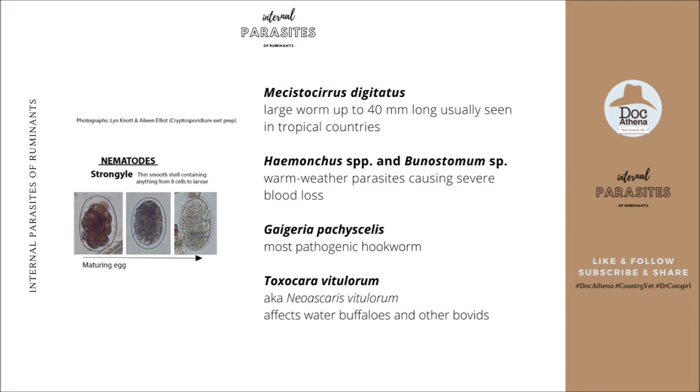Mecistocirrus digitatus is a large worm, up to 40 mm long, usually seen in tropical countries. This is very important for us in the Philippines since we are a tropical country. Mecistocirrus digitatus is one of the stomach worms of ruminants. Next are the Haemonchus species and Bunostomum species, which are also called warm weather parasites causing severe blood loss and eventually anemia.